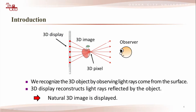The reconstruction method is a method to display 3D images. We recognize the 3D object by observing light rays coming from the surface. The 3D display reconstructs light rays reflected by the object and makes 3D pixels by using those light rays. When the 3D display reconstructs light rays exactly, we can see the natural 3D image.